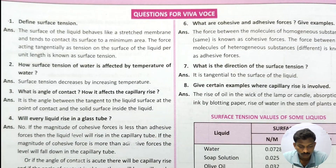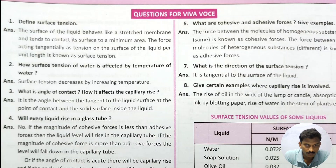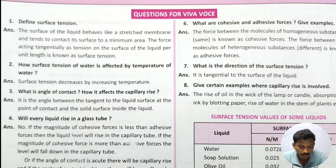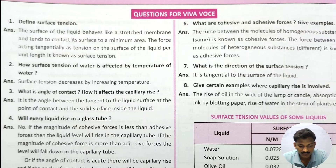Second question: How is the surface tension of water affected by temperature? The surface tension changes based on the temperature of water. As temperature increases, density is affected. Surface tension decreases with increasing temperature. As the water temperature increases, the surface tension decreases.